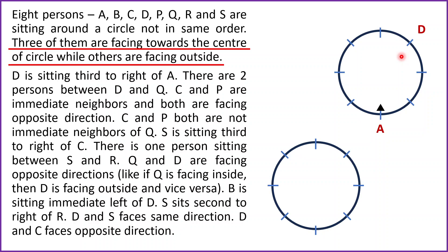Now let's consider Case 2: A is facing outside the center. Since A is facing outside, this side will be the right side of A. We have to place D third to the right of A, so count one, two, three — D will be placed here at this position in Case 2.